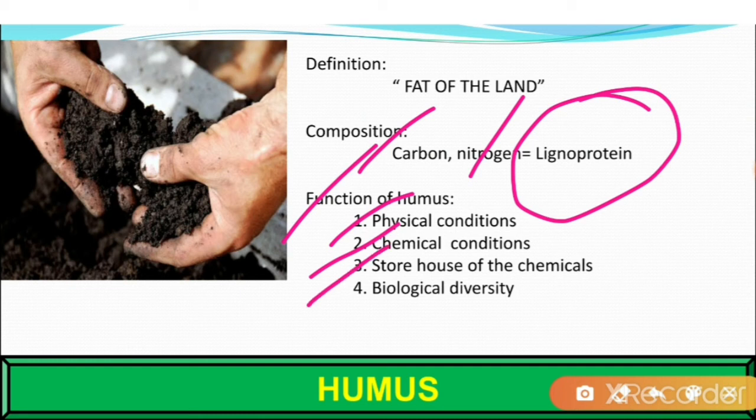Third, humus acts as a storehouse of food materials for higher plants. It holds and slowly releases nitrogen, phosphorus, minerals, and CO2 under the action of microorganisms. It also helps to maintain biological diversity in the soil, which ultimately contributes to soil fertility and plant growth.